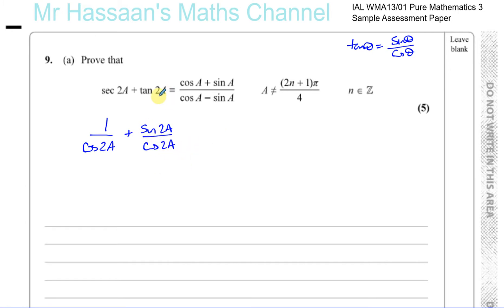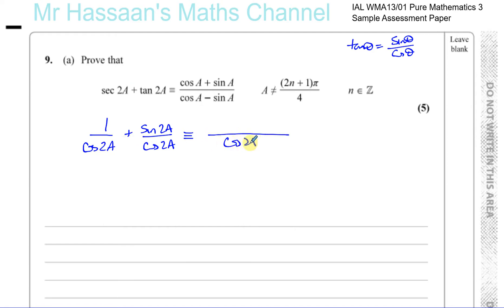Now when dealing with these identities, sometimes you can't see the whole picture in front of you at the beginning. However, the only thing we could really do here is change them in terms of sine and cosine, because these are all sines and cosines. We can combine these two into one fraction with a common denominator of cos2A, giving us 1 plus sine of 2A over cos2A.